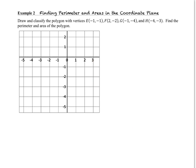Example number two says we're going to be finding perimeter and area in the coordinate plane. Our instructions say draw and classify the polygon with these vertices, and then find the perimeter and area of the polygon. So let's start out by plotting these points. I'm going to pause the video. You plot the points and label them with the point name, like E, F, G, and then turn the video back on when you're done.